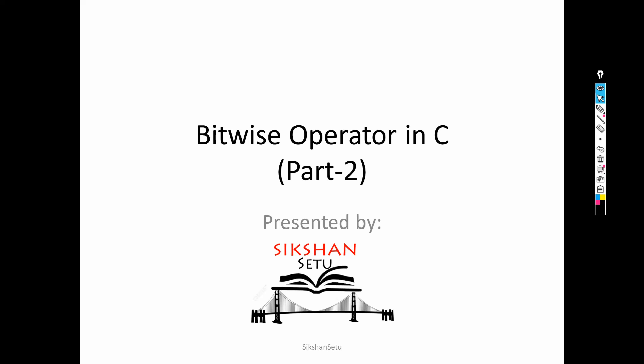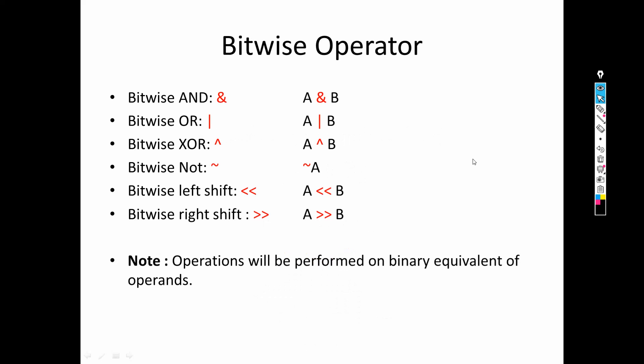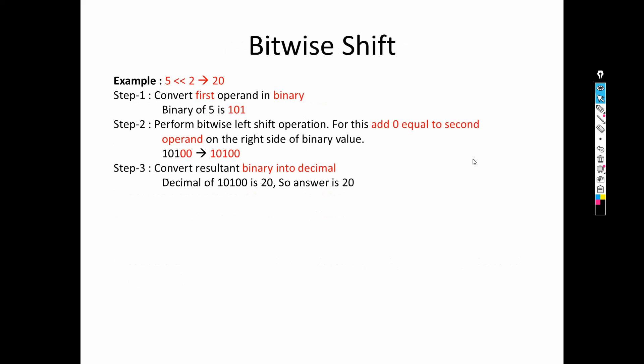If you have not gone through Part 1, you are requested to go through it and understand how we can perform bitwise AND, bitwise OR, and bitwise XOR operations. As we have seen, these operators perform operations on each bit — we need to convert our number from decimal to binary, and then perform AND, OR, and XOR on each bit of the binary number. That is why these are known as bitwise operators. In this part, we will be discussing about the bitwise SHIFT operator.